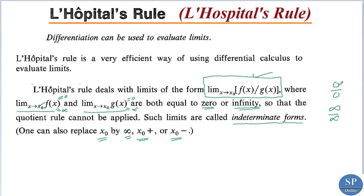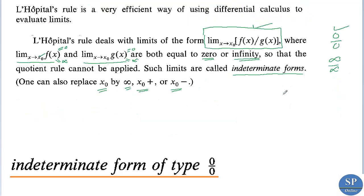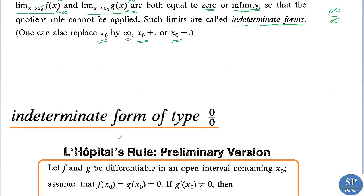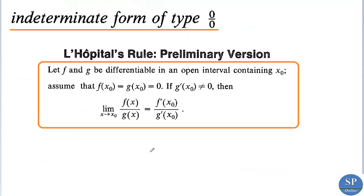To find the limits of indeterminate forms we can use L'Hôpital's rule, which is written as shown. First, we will discuss the indeterminate form of the type 0/0. For that, we can state the preliminary version of L'Hôpital's rule.